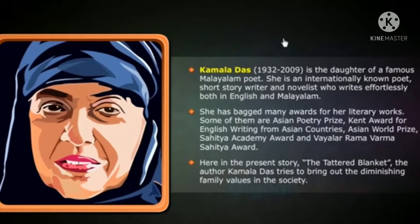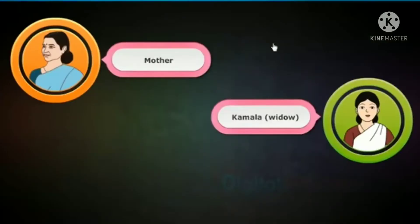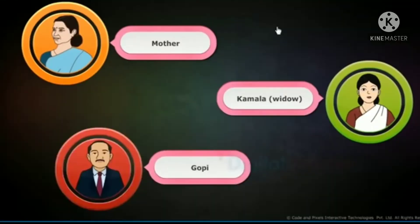In the present story, The Tattered Blanket, the author Kamala Das tries to bring out the diminishing family values in society. The characters in the story are: an old woman, Kamala – a widow and daughter of the old woman, and Gopi – son of the old woman.